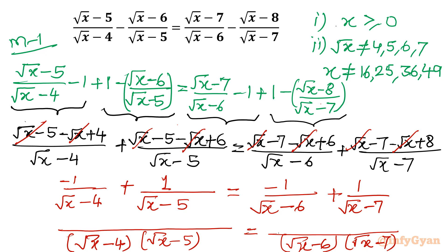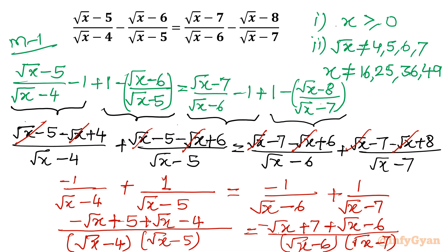Now let us write the numerators. On the left: −(√x − 5) + (√x − 4) after cross-multiplication. On the right: −(√x − 7) + (√x − 6). We can cancel the plus and minus √x terms. In the numerator, 7 − 6 = 1 and 5 − 4 = 1, so the numerator is simply 1 on both sides.